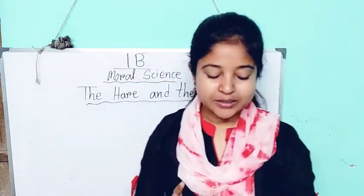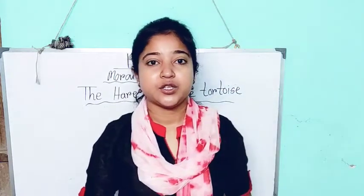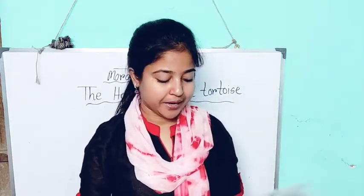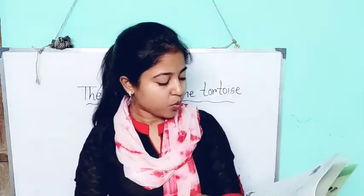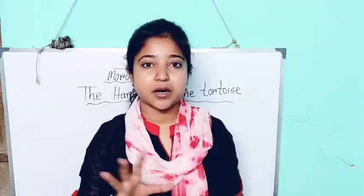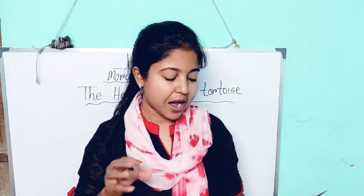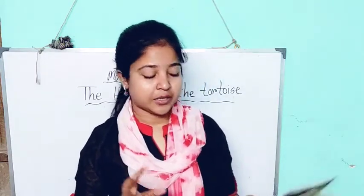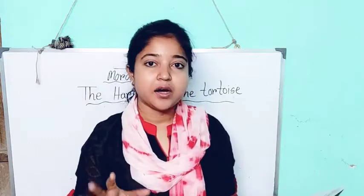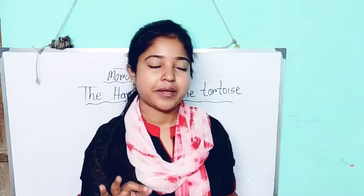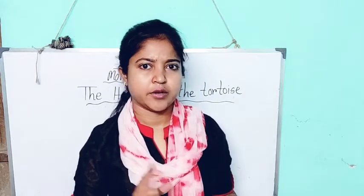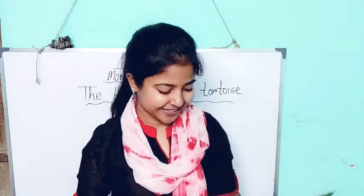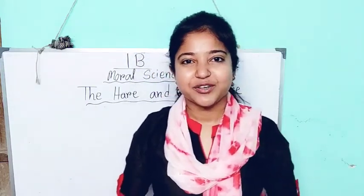Now here two jumbled words are given. You have to unscramble the words — arrange the letters to make a meaningful word. I will not say the answer; you will write your own answer. Write all the answers in your moral science copy. Thank you for watching.